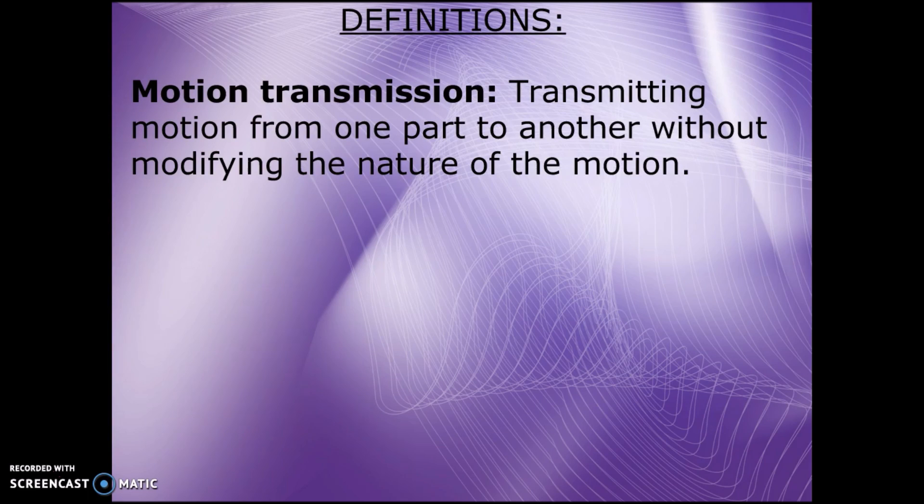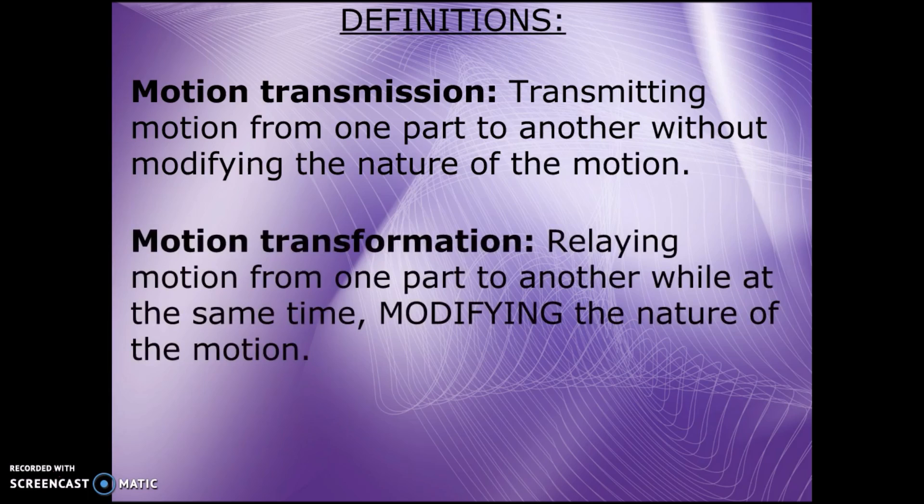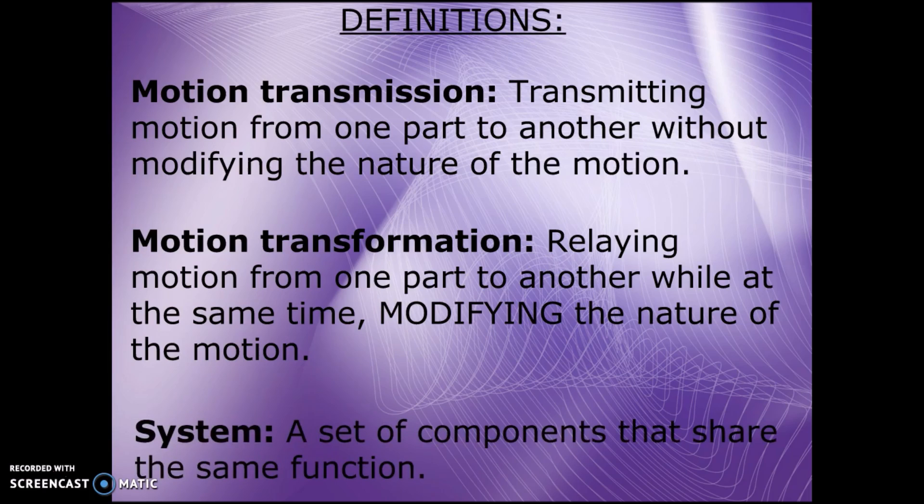Motion transmission occurs when motion is transmitted from one part to another, transferred without modifying the nature of the motion. In motion transformation, you're moving motion from one part to another but at the same time modifying or transforming, changing the nature of the motion.